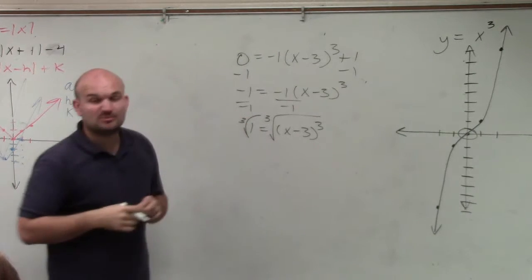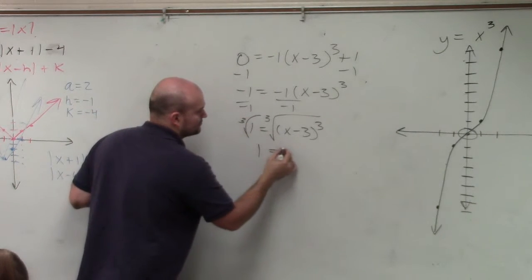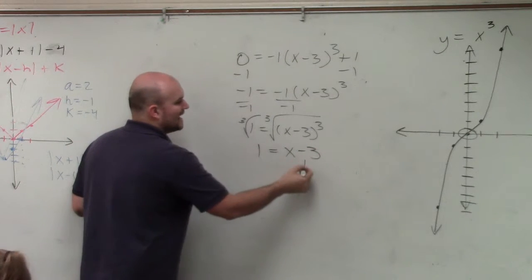The cube root, what number multiplied by itself three times gives you 1? 1. Add the 3.